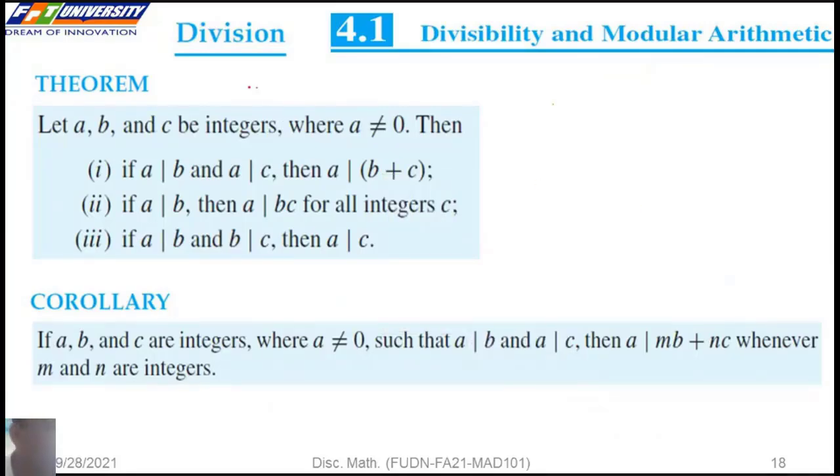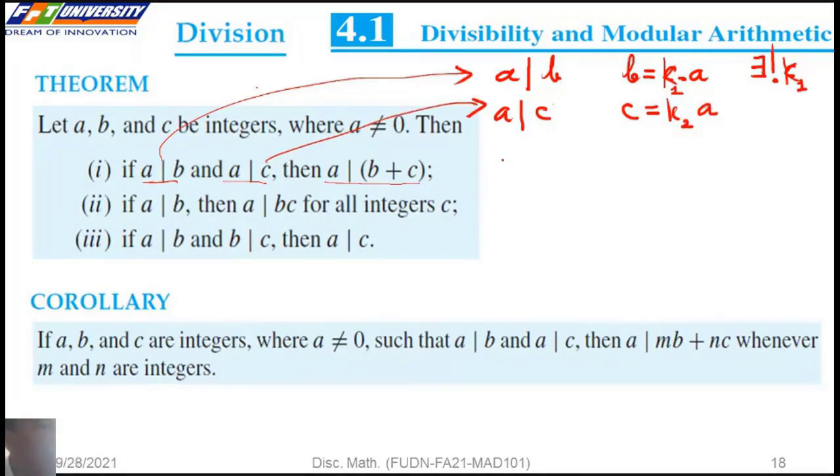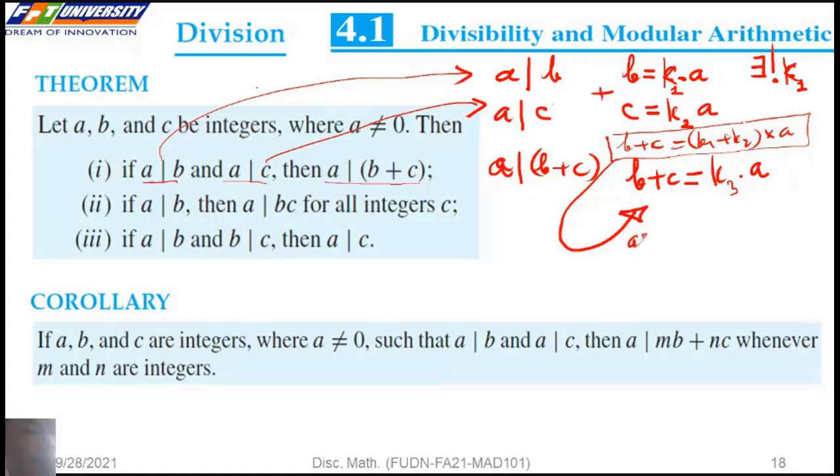This is important. The theorem says that if a divides b and a divides c also, then we have a divides the sum of b and c. It means if a divides b and a divides c, we can write b equals k1 times a and c equals k2 times a. We want to check a divides b plus c. We have b plus c equal to k3 times a. We have b plus c equal to k1 plus k2 multiplied by a. We assign k3 equals k1 plus k2.